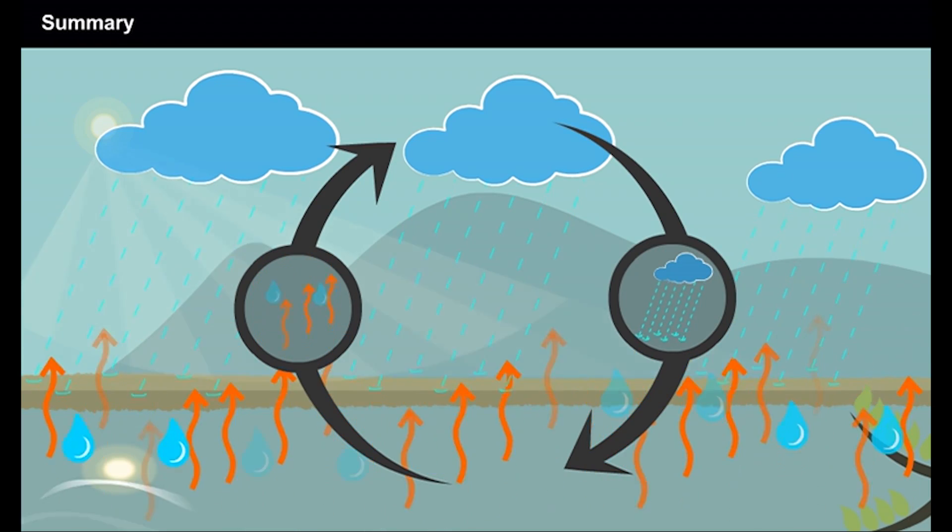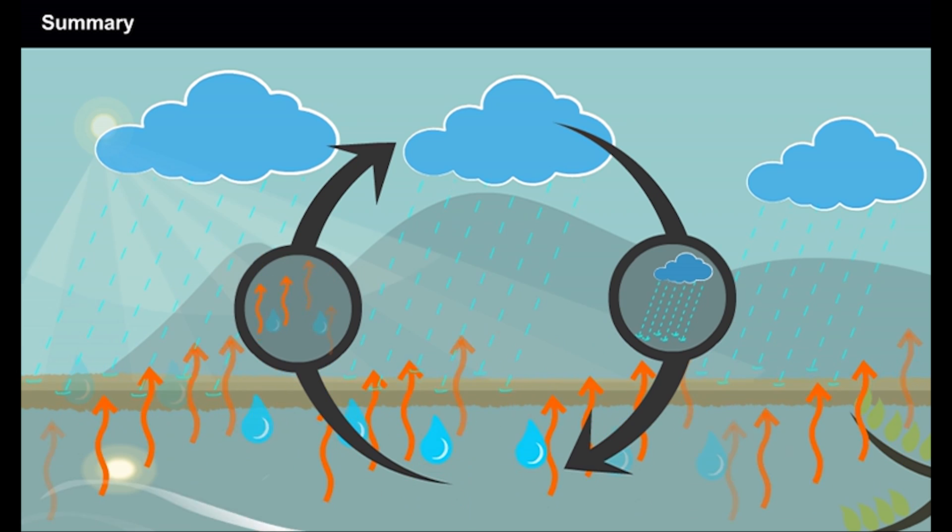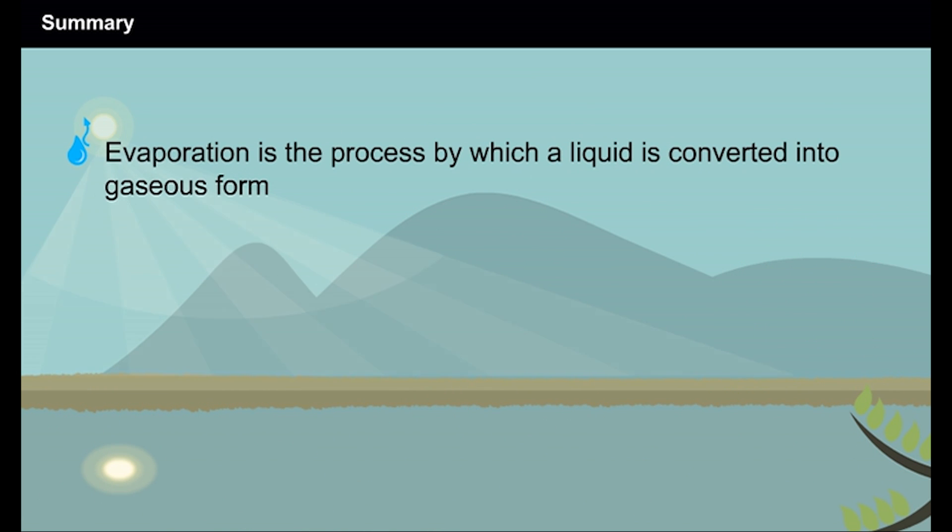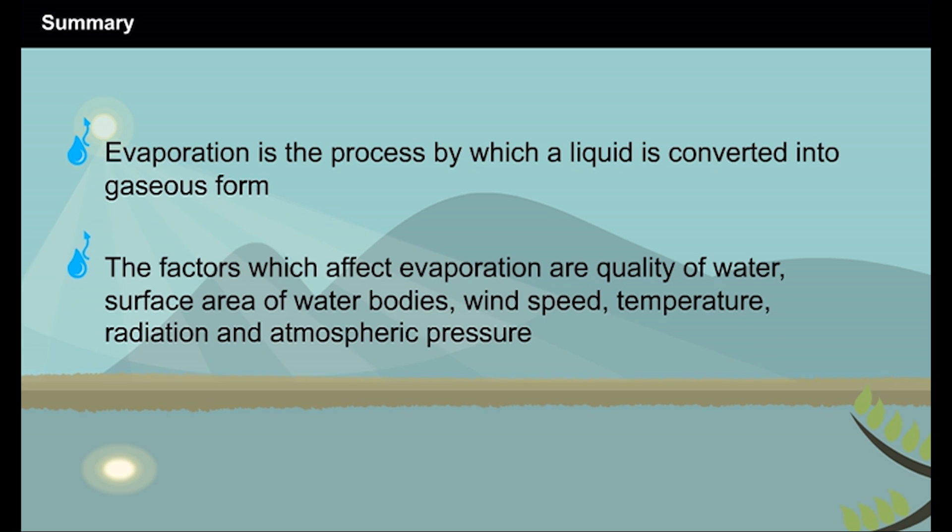Summary. Let us summarise what we have learnt in this lesson. Evaporation is the process by which a liquid is converted into gaseous form. The factors which affect evaporation are quality of water, surface area of water bodies, wind speed, temperature, radiation and atmospheric pressure.